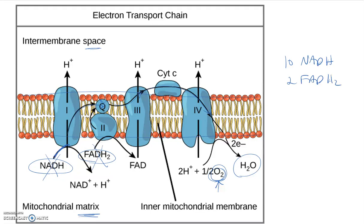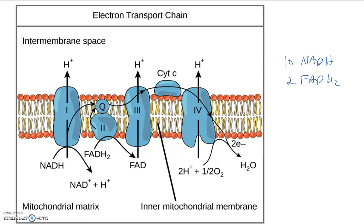As these electrons are being passed from one member of the chain to the next, they lose a little bit of energy. Some of that energy is used to pump a proton — a positively charged hydrogen ion — from one side of the inner membrane to the other. A proton, because it's charged, cannot pass through the membrane without some kind of channel or pore, because the phospholipid bilayer doesn't allow charged particles to cross.